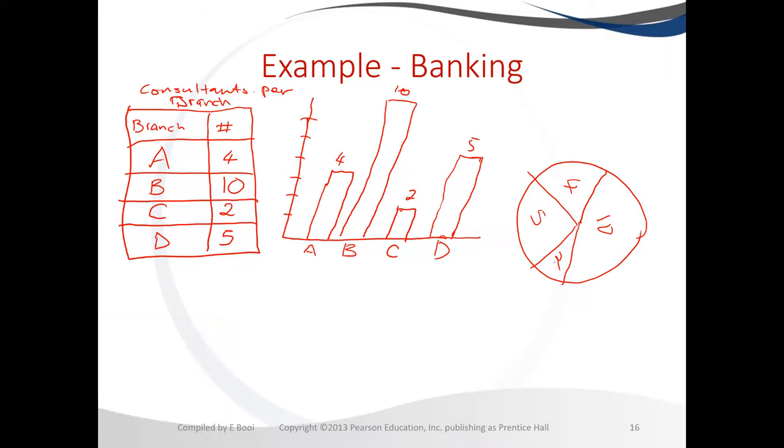And we know which one they represent. So 2 was branch C, and 5 is branch D, and 4 is branch A, and B with 10. And also with the pie chart, you are able to see the distribution of your consultants, because then you can see the bigger the slice, the bigger the number of consultants you have.